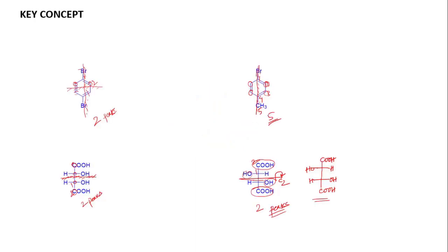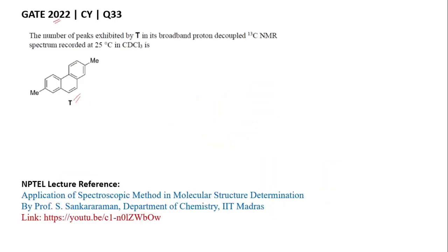So the number of peaks exhibited by compound T is 8. To learn more about the application of spectroscopic techniques in structure determination, please visit the provided link and go through this NPTEL lecture series. Thank you.